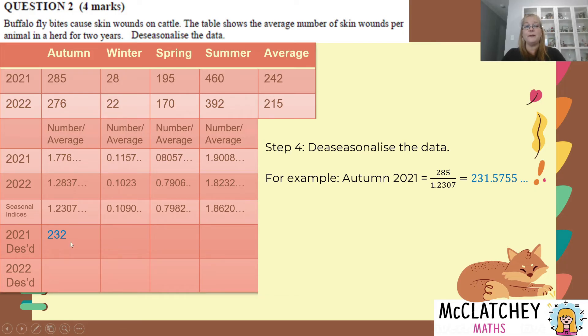Then we're going to repeat that process. So we'll take the 28, we'll divide it by 0.1090, the 195 by its index and the 460 by its index. And then we repeat for the year 2022. So now we have seasonal indices for all of our original data.